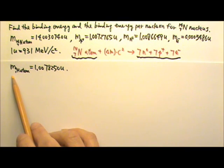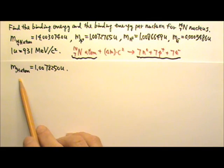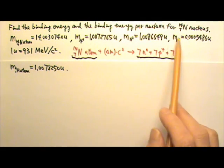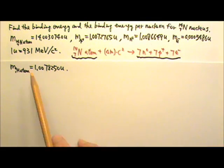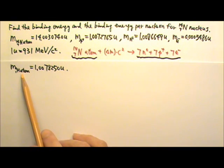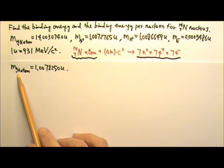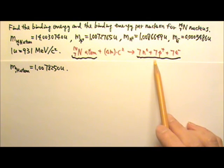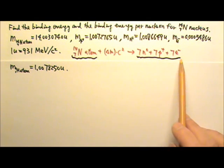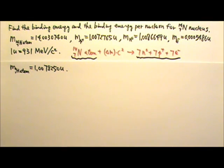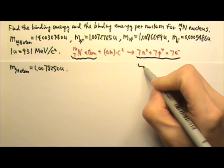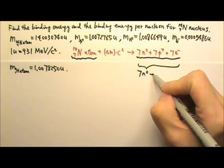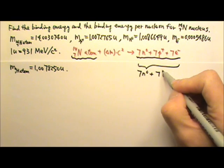Sometimes we may be given the mass of hydrogen-1-1 atom instead of the mass of a proton and the mass of an electron. Because a hydrogen-1-1 atom has one proton and no neutron and one electron, we can use 7 hydrogen-1-1 atoms to substitute for the 7 protons and 7 electrons. This can actually make our calculations a bit simpler.